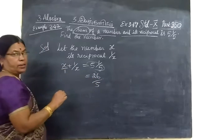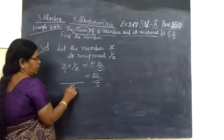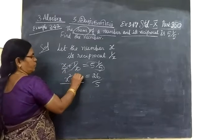Now we take the LCM for this. LCM is always put a long line. Denominator is x. So x will be x, x square plus 1.